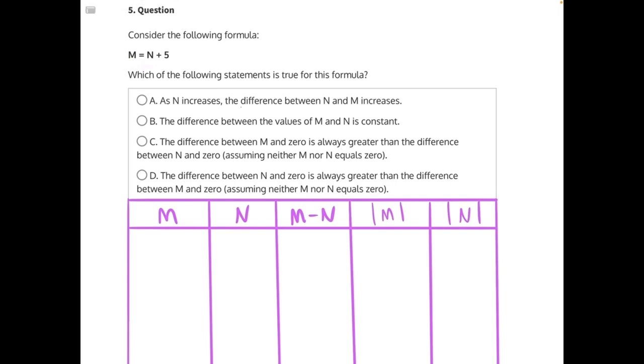the fastest way, is if you realize or notice that these first two answer choices are talking about the difference between M and N. So you could start by taking that difference. Difference in math means to subtract, so M minus N.